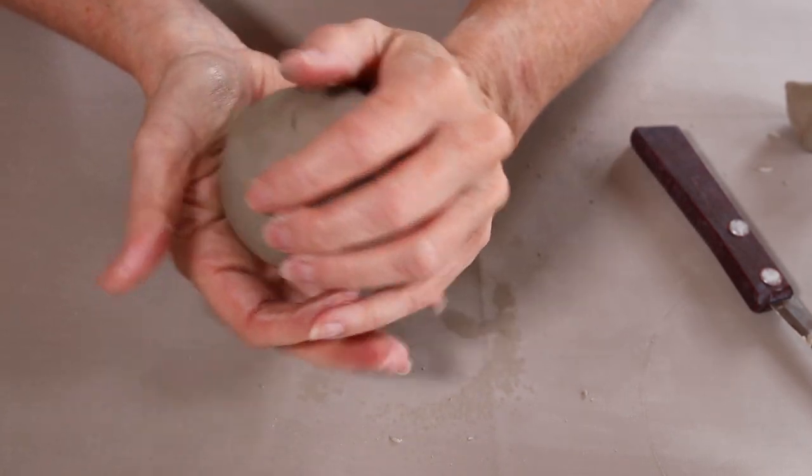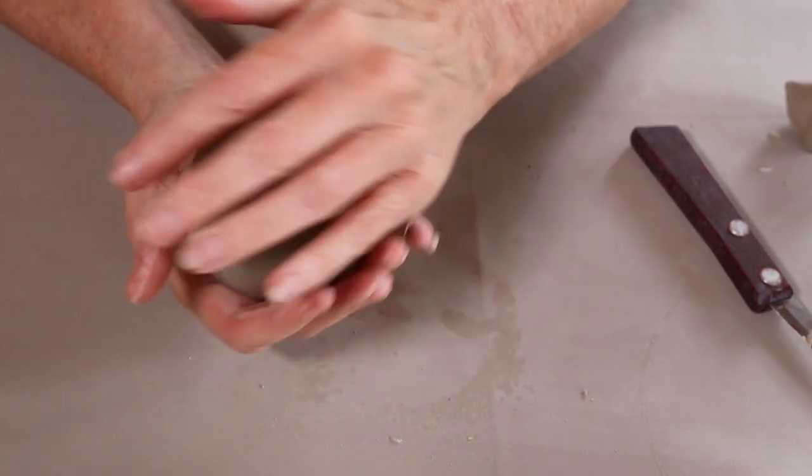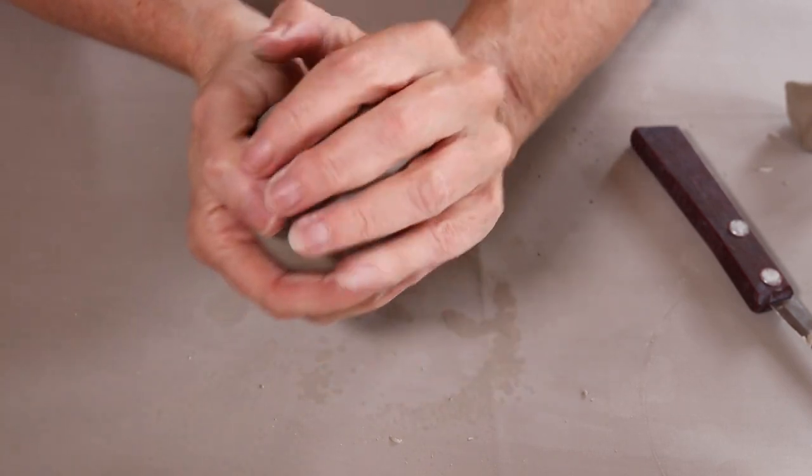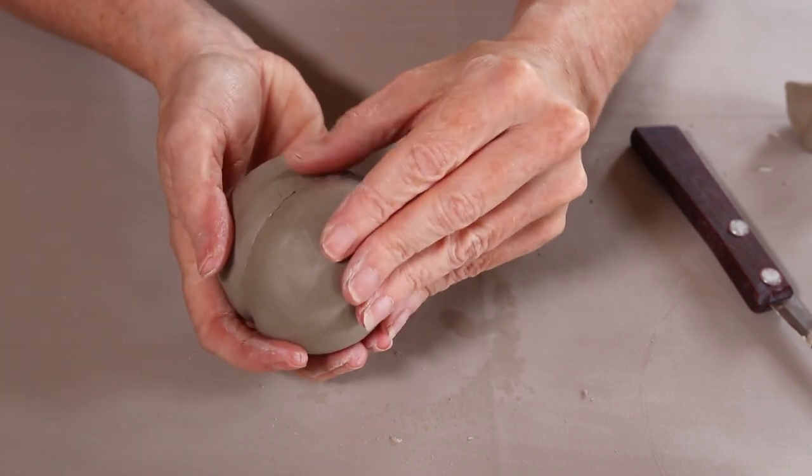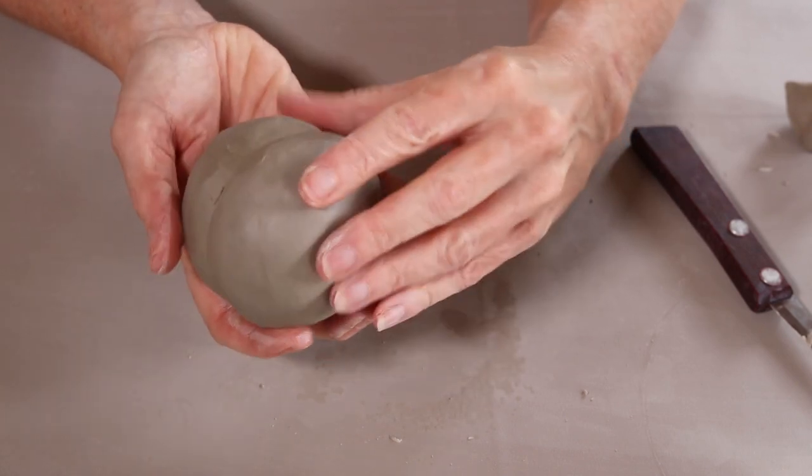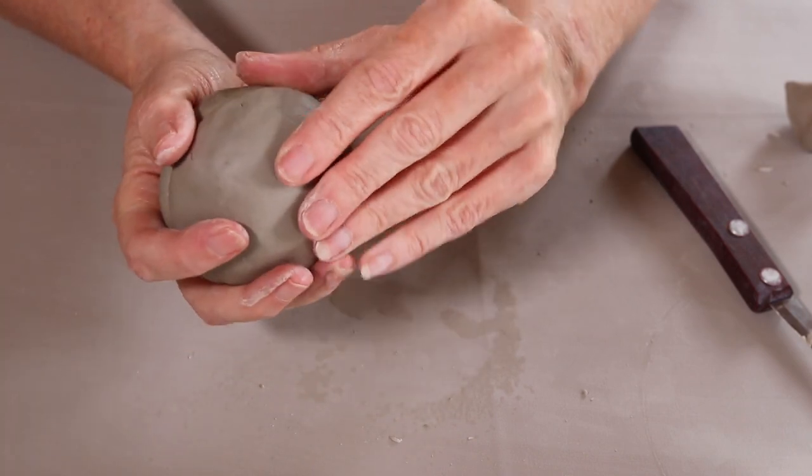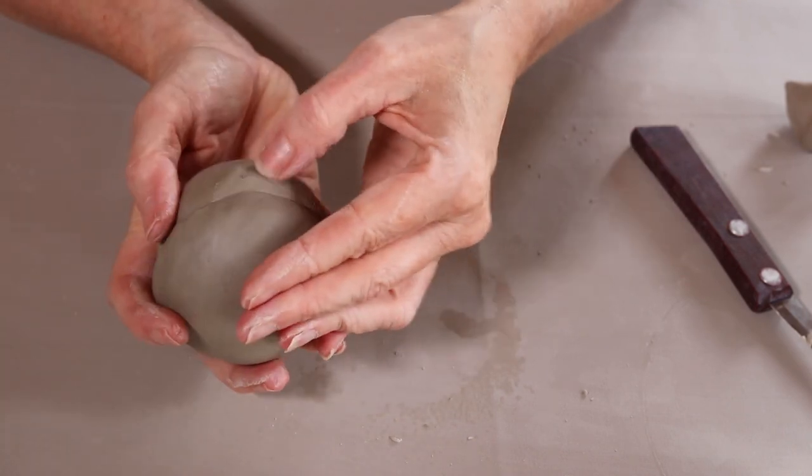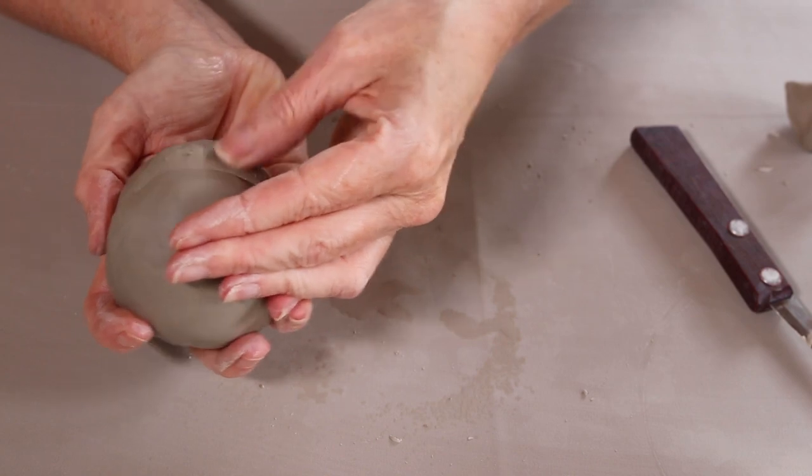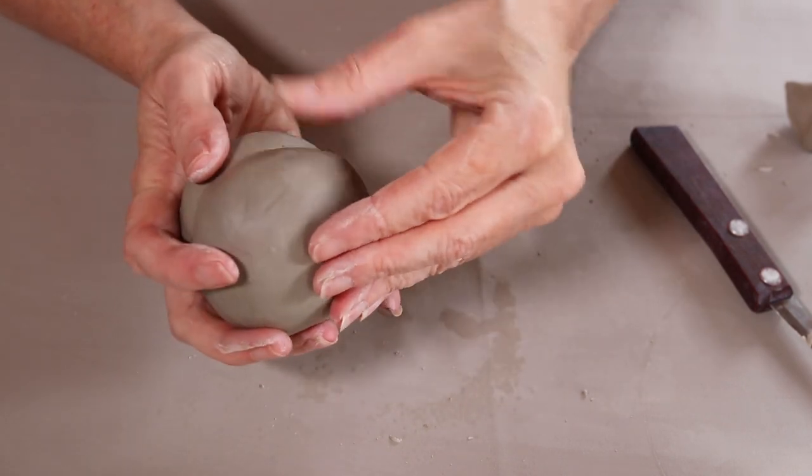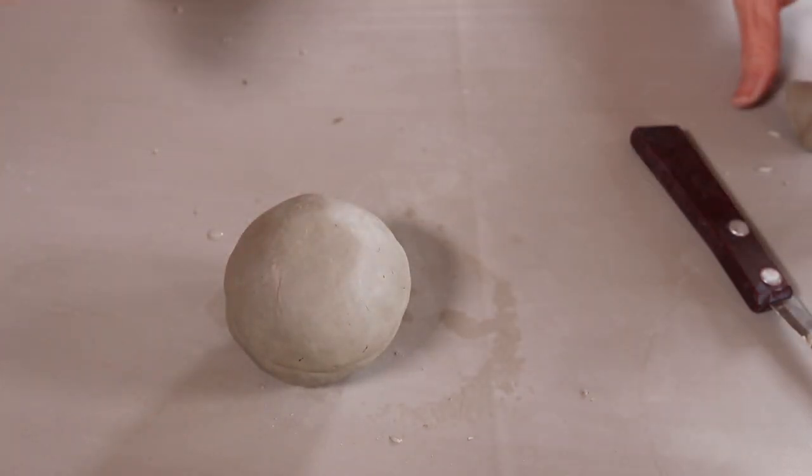Okay that's starting to look good and you also want to just start around with your hands as well. Now sometimes what I do to join the pieces which I think I will do with this one is you can add a coil all the way around and actually I think I'll show you how to do that.